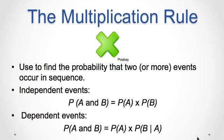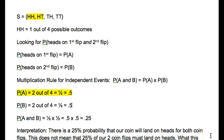Suppose that you flip a coin twice. What is the probability that your coin lands on heads on both flips? Put another way, what is the probability that your coin lands on heads on the first flip and on the second flip? We can create a sample space that lists the outcomes of this experiment. Flipping a coin twice, where H represents heads and T represents tails, the sample space is S = {HH, HT, TH, TT}. There is one outcome — one out of four possible outcomes — for heads on both flips.